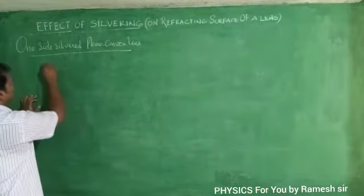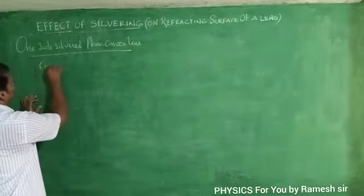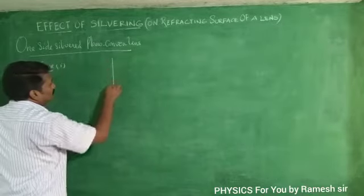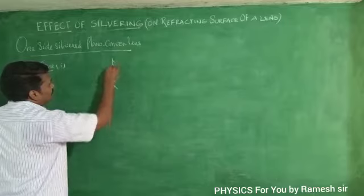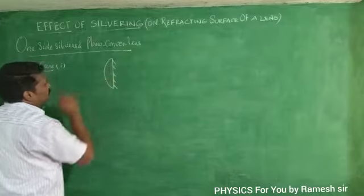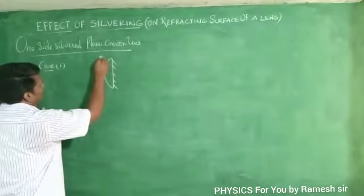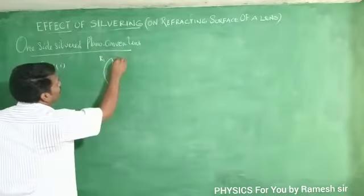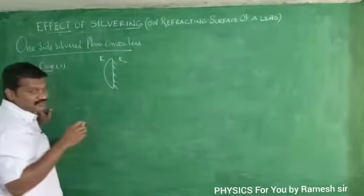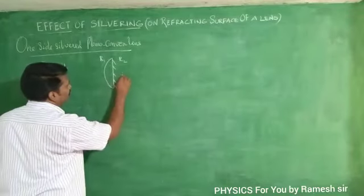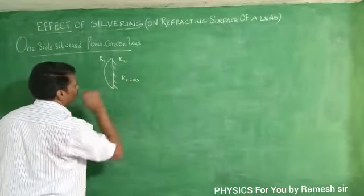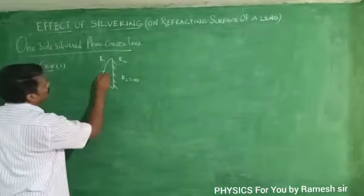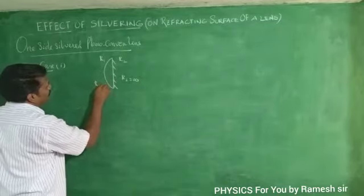Consider first case: if the plane surface of the plano-convex lens is silvered. Here r1 is the radius of curvature of one side and r2 is the radius of curvature of the other side. You know that r2 is equal to infinity and r1 is equal to r.